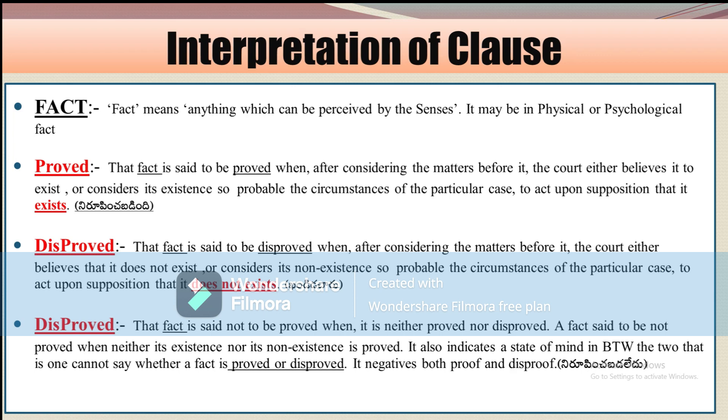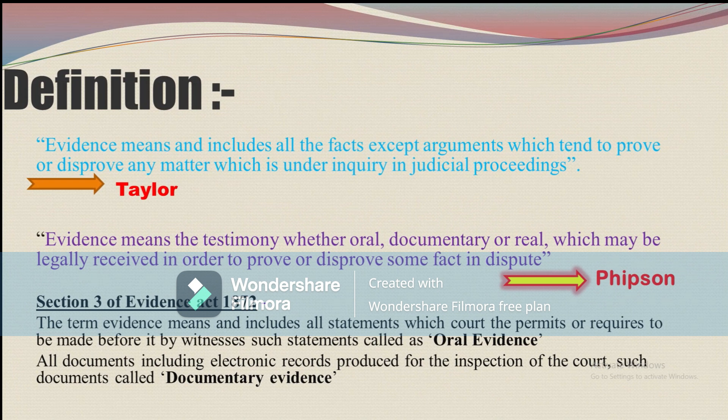Now let us discuss the definition of the Evidence Act 1872. Definition by Tyler: Evidence means or includes all the facts, except arguments, which tend to prove or disprove any matter which is under inquiry in judicial proceedings. You can see the words fact, prove, and disprove repeatedly appear here.